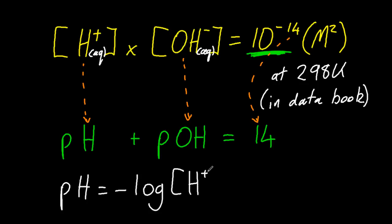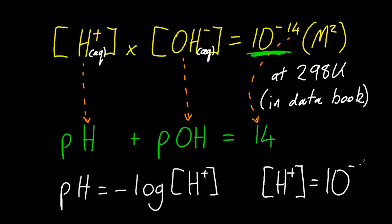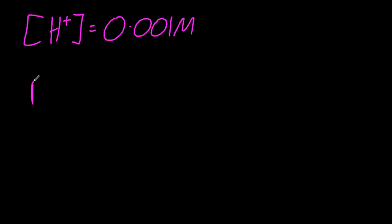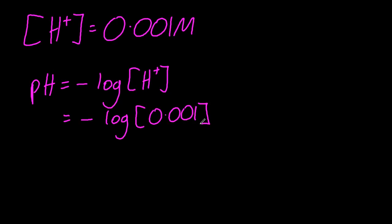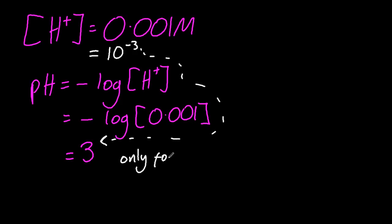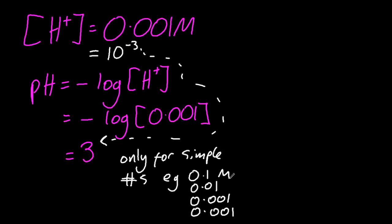pH is the negative log of the hydrogen ion concentration, and the hydrogen ion concentration is therefore 10 to the minus pH. It looks complicated, but we'll give you one and you give us the other three. Let's look at an easy one. If the hydrogen ion concentration is a thousandth of a molar, pushing it through the equation gives pH 3. This is a standard SL case — it really only works for simple numbers like a tenth, a hundredth, a thousandth, ten thousandth molar.